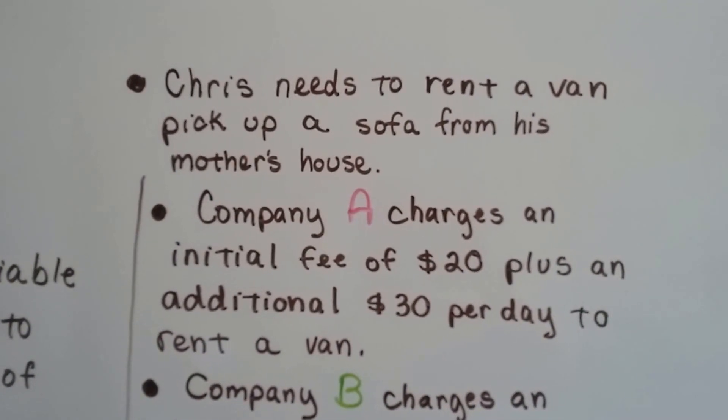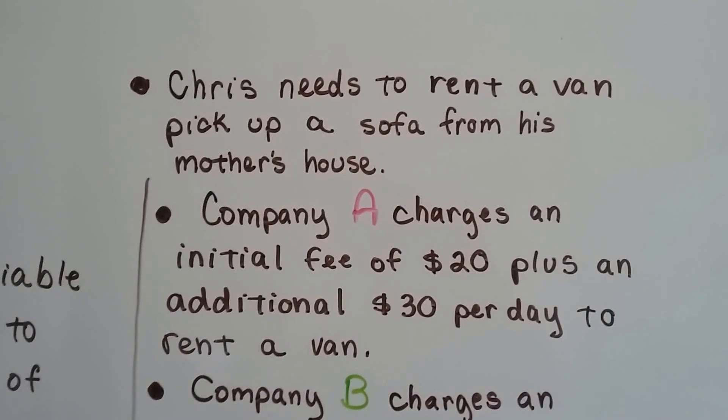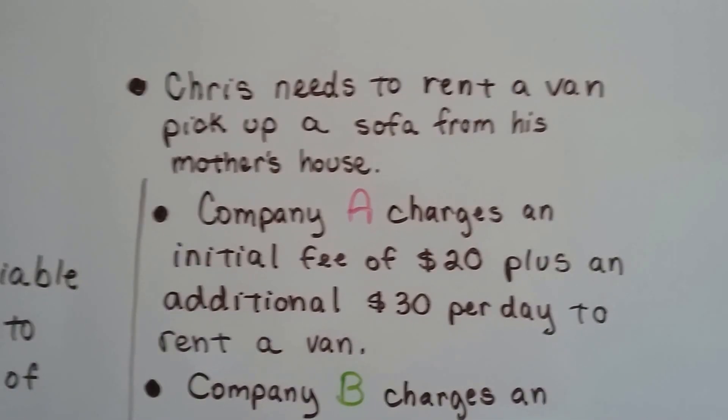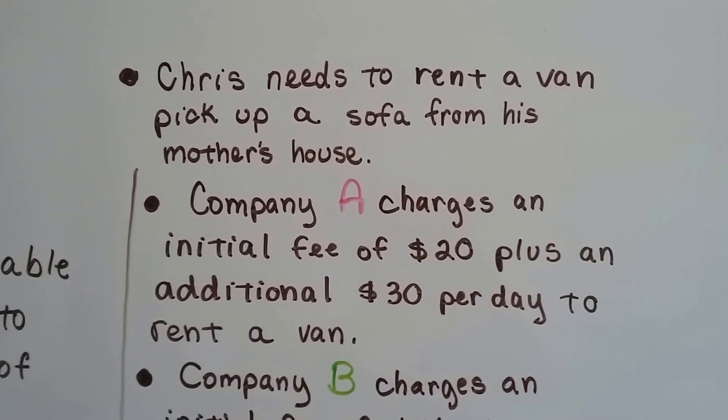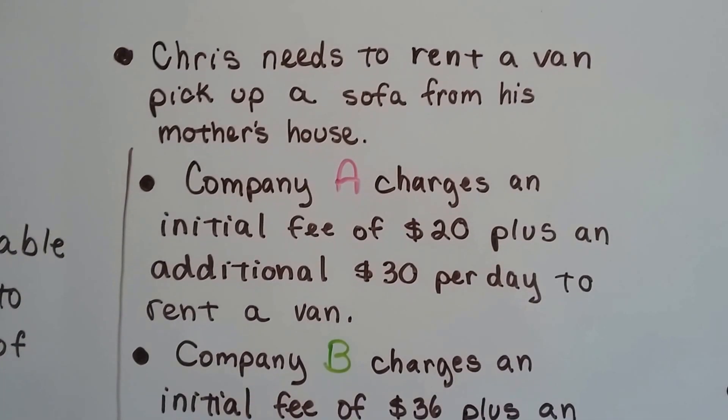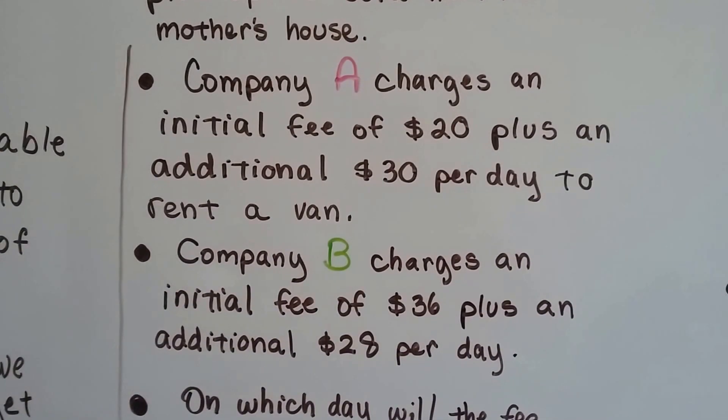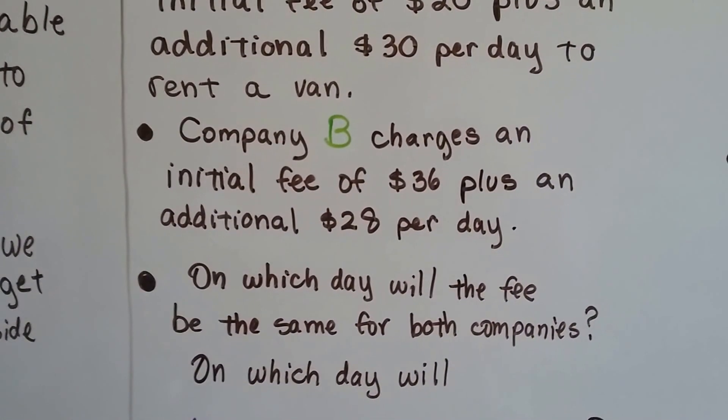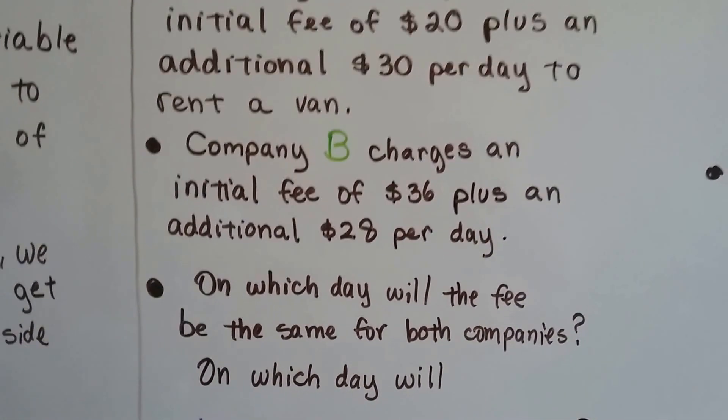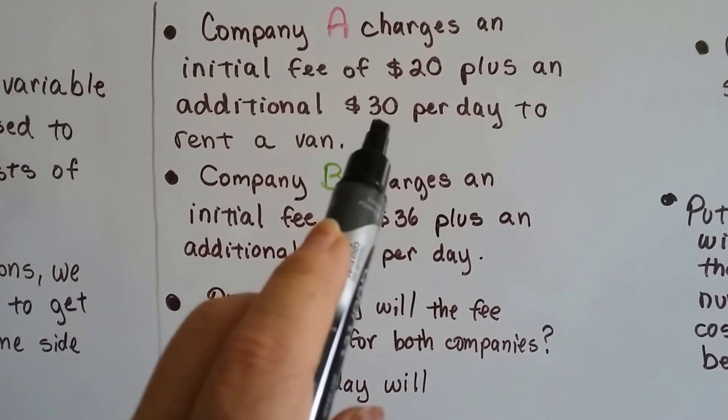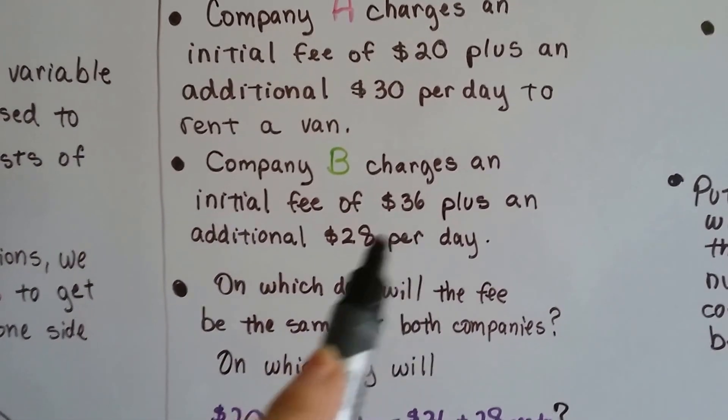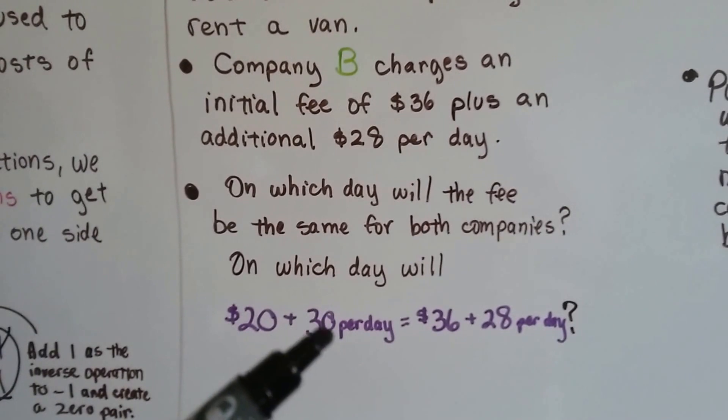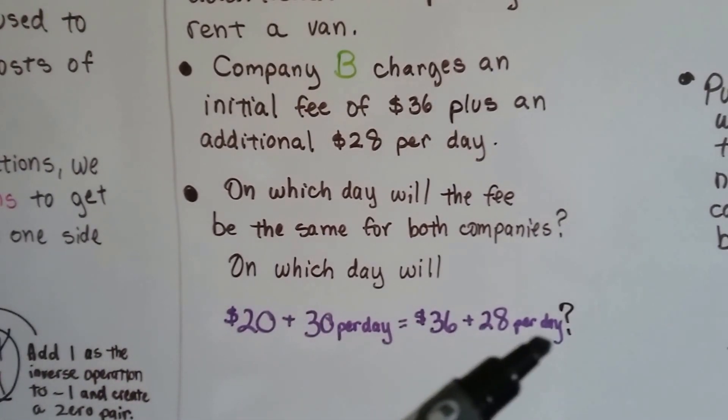Chris needs to rent a van to pick up a sofa from his mother's house. No, Chris, you really do need to get this sofa out of here. You promised. But anyway, Company A charges an initial fee of $20 plus an additional $30 per day to rent a van. And Company B charges an initial fee of $36 plus an additional $28 per day. So on which day will the fee be the same for both companies? So A is $20 plus $30 a day, and B is $36 plus $28 a day.